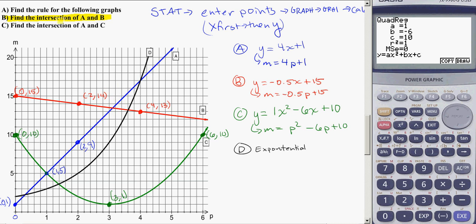But if we try to find the intersection of A and B, that's where line A and line B are going to cross. So that's right here. And you can tell, I can't exactly read that off the graph. I know it's somewhere around 3 and 13, but I don't know exactly what it is.